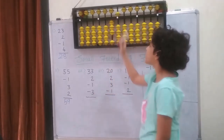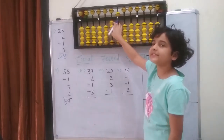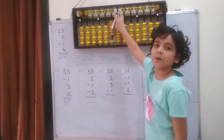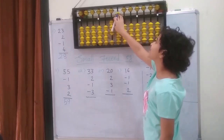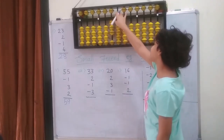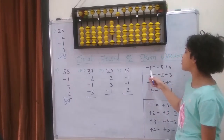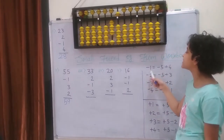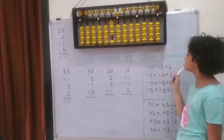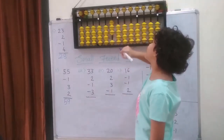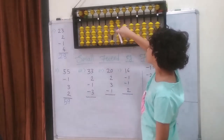Then I am going to minus 1 from it. I cannot because I have no beads left. I have to check if the upper bead is available or not for subtraction. This time it is available for subtraction, means I can do the small friend formula. So small friend formula of minus 1 is: minus 1 equals minus 5 plus 4. Minus 5 and plus 4: 1, 2, 3, 4.